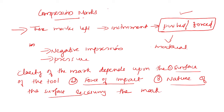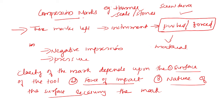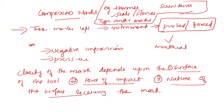Compression marks — examples include hammer on a surface, metallic seals or stones, marks of a screwdriver, and typewriting marks. So hammer, seals, stones, marks of a screwdriver, typewriting marks, etc. — these are the examples for compression marks. This is about compression marks.